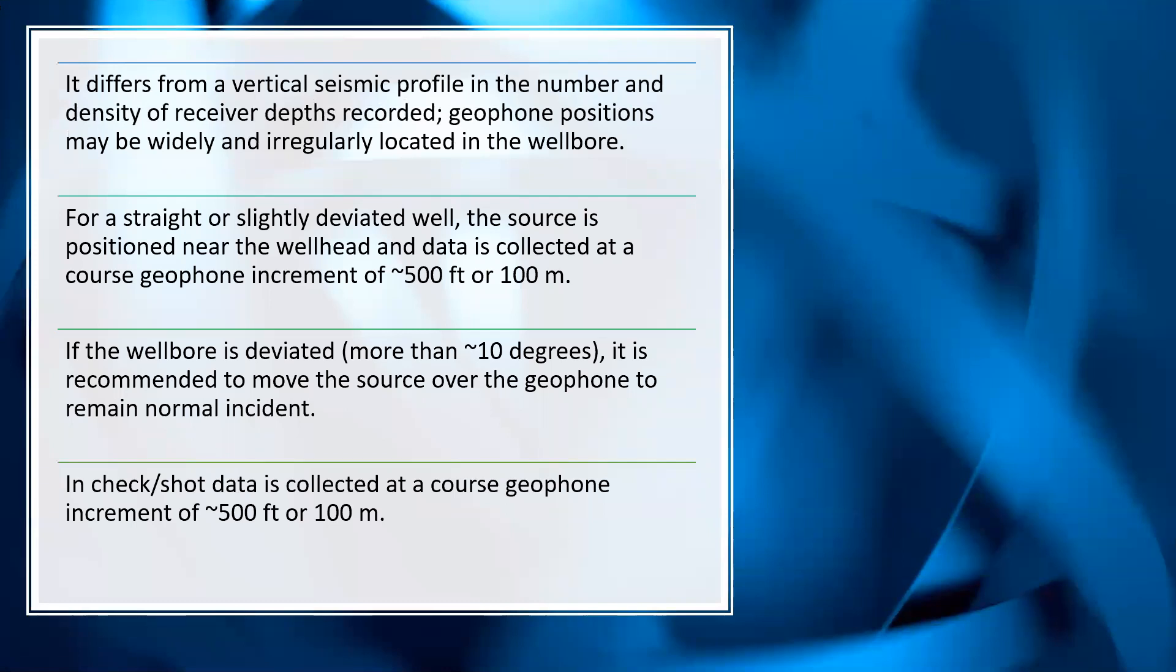These are a few more points that describe CheckShot survey. First, it differs from vertical seismic profile in the number and density of receiver depths recorded. Geophone positions may be widely and irregularly located in the wellbore. This is one difference between VSP and CheckShot. In CheckShot survey, the geophones are at larger spacing without following a regular pattern and are placed at geological formations contact.